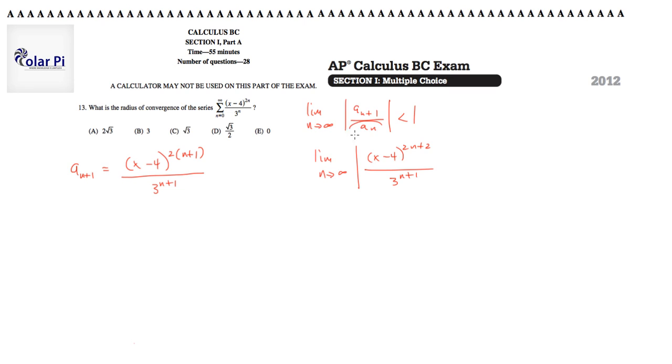and then it's dividing that by a sub n, which is this. Dividing by this is the same as multiplying by its reciprocal. So we do that, and so we write times 3 to the n over x minus 4 to the 2n power.